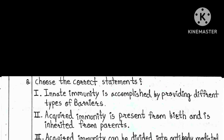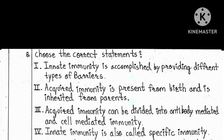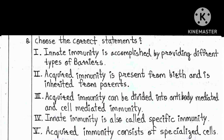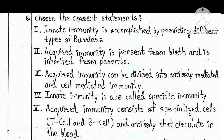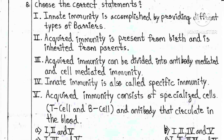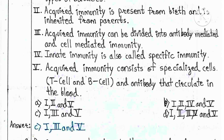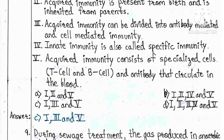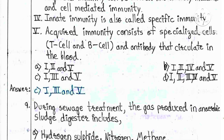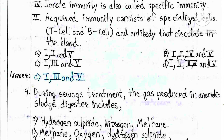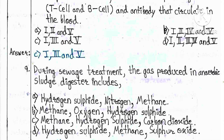Question 8: Choose the correct statement(s). 1) Innate immunity provides different types of barriers. 2) Acquired immunity is present from birth and inherited from parents. 3) Acquired immunity can be divided into antibody-mediated and cell-mediated immunity. 4) Innate immunity is also called specific immunity. 5) Acquired immunity consists of T cells, B cells, and antibodies circulating in blood. Options: A) 1, 2, 5 — B) 1, 2, 4, 5 — C) 1, 3, 5 — D) 1, 2, 3, 4, 5. The answer is C — statements 1, 3, and 5.